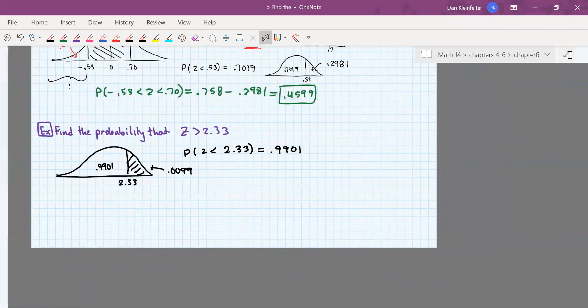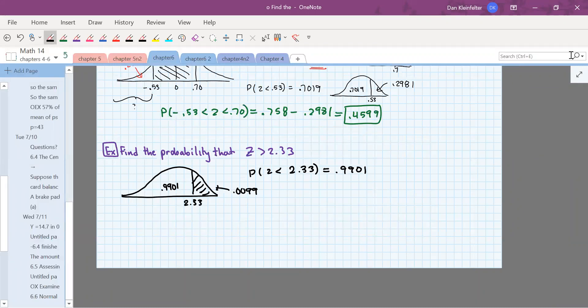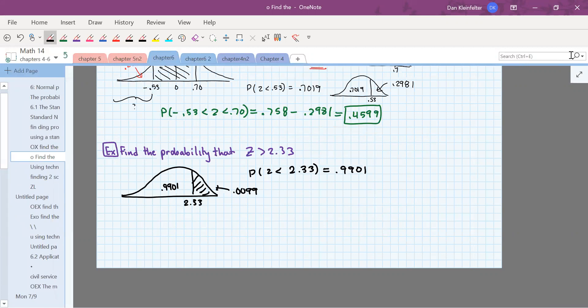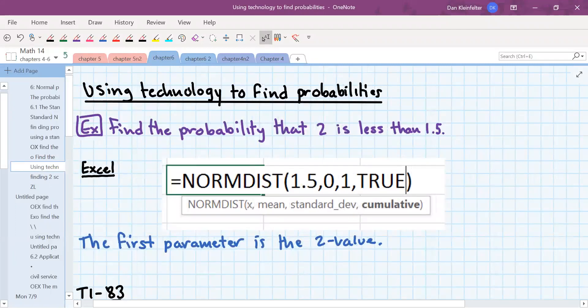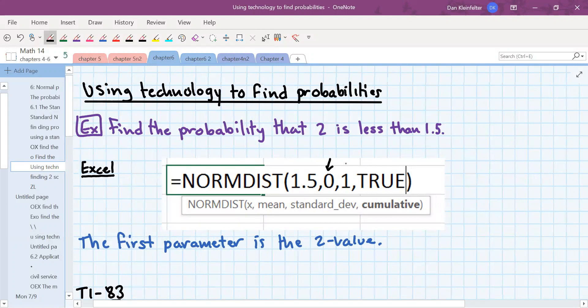All right, so we've focused on the process of if we are given a z value, how you find the corresponding area. And now what we're going to do is look at how you use technology rather than the table. So if you wish to use Excel to do this, the relevant function is called NORMDIST, or normal distribution. This one is set up for any normal distribution. So one thing you'll have to put in is the mean, which here I've got a 0, and the standard deviation, which is 1. And then another parameter you'll need is to put in true to indicate that it's cumulative, that is running from negative infinity up to your particular cutoff.